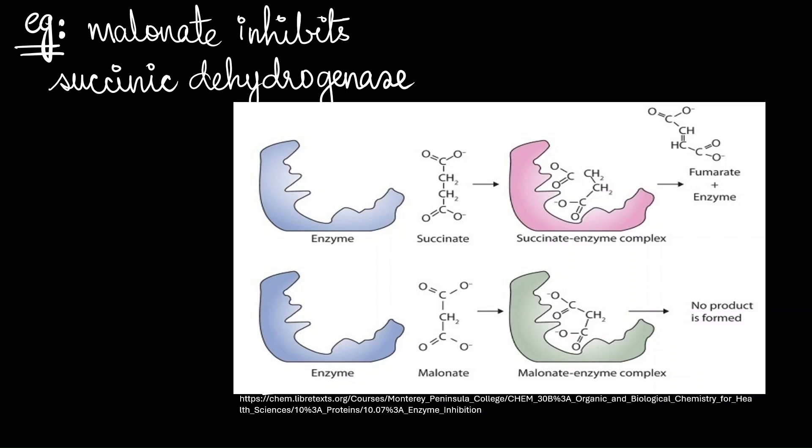In TCA cycle, succinic dehydrogenase catalyzes the conversion of succinate to fumarate. You can see that both these molecules share similar binding sites with that of the enzyme and therefore can competitively inhibit each other in the reaction.